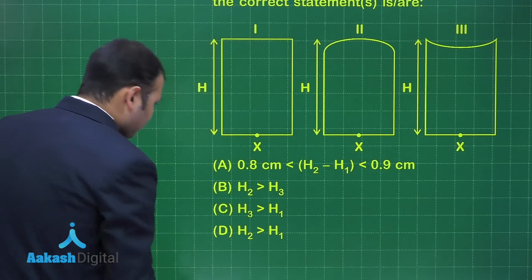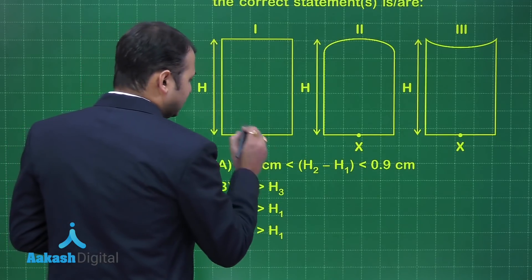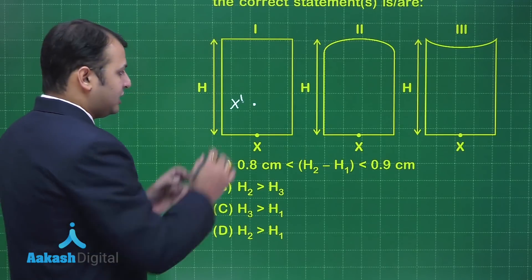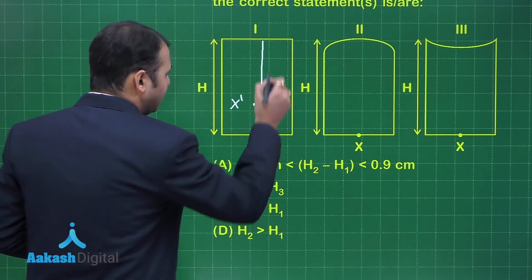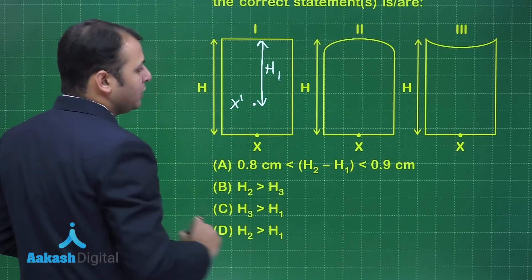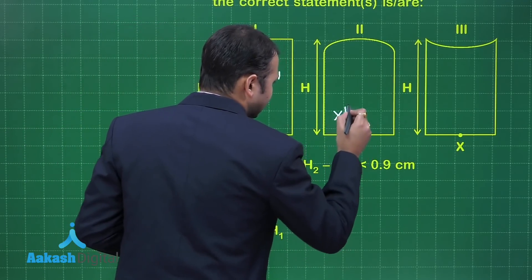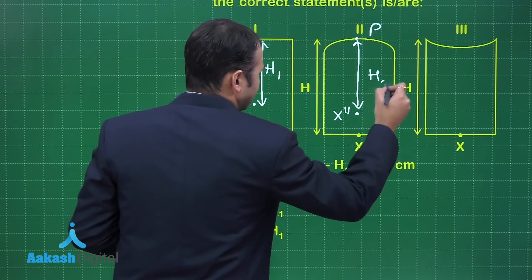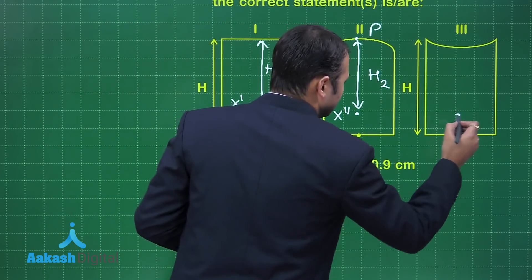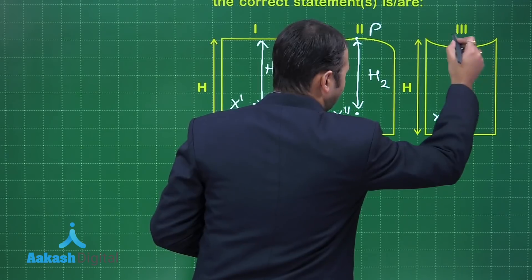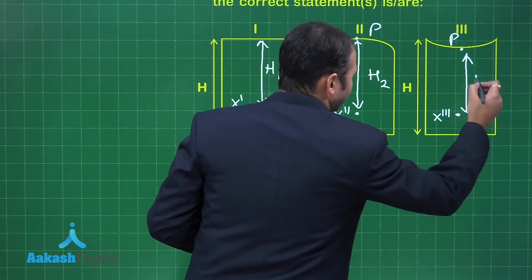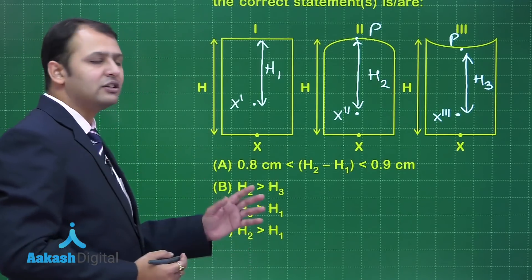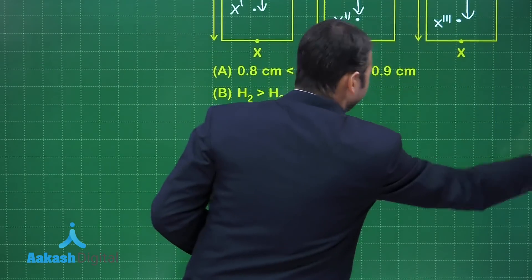Looking at the solution: for cylinder 1, this is a flat surface and the object appears at a new position due to apparent shift — let's mark this as the new position, and the distance from here to here is h1. For cylinder 2, let's assume the image appears at point X double dash, with the pole marked here — this distance is h2. For cylinder 3, similarly, the pole is marked and that distance is h3. We need to find the values of h1, h2, and h3 to determine the best suitable option.